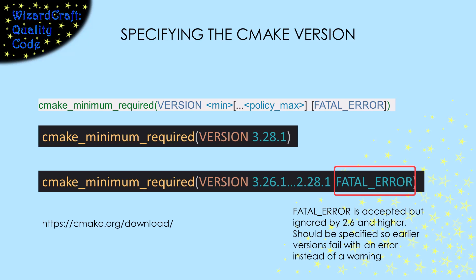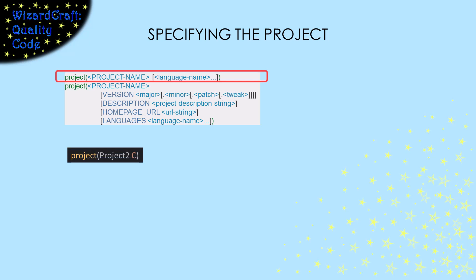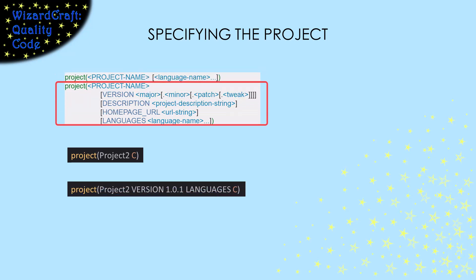I've given you a link here that you can use to find the most recent CMake version. The next thing you have to tell CMake about is your project. At a minimum, you have to give your project a name and specify the languages that it uses. However, if you like, you can also give it a version number, a description, and specify a homepage that talks about it. Note, if you have any of these additional arguments, you have to put the word LANGUAGES before the list of languages that it uses.